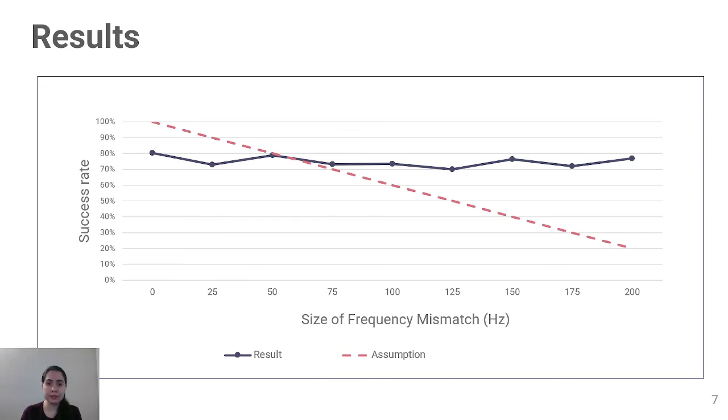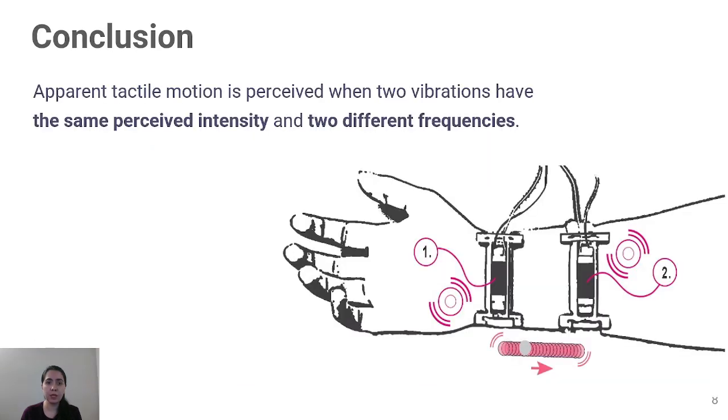We found instead that there is no statistically significant effect of having two different frequencies on the detection of apparent tactile motion. We conclude that it is possible to perceive the apparent tactile motion illusion with a combination of different devices that produce a different range of vibratory frequencies as long as they produce the same perceived intensity.